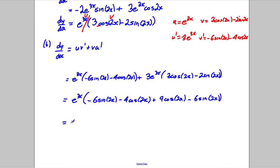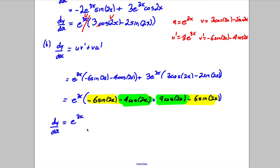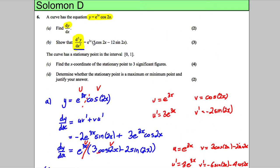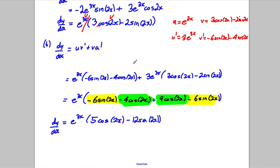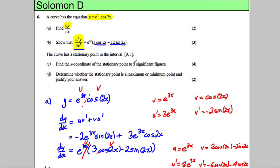Combining these terms: the sine 2x terms give negative 6 sine 2x minus 6 sine 2x, which is negative 12 sine 2x; and the cos 2x terms give negative 4 cos 2x plus 9 cos 2x, which is 5 cos 2x. So d²y/dx² equals e to the 3x times (5 cos 2x minus 12 sine 2x), which is exactly what we were asked to show — three marks.